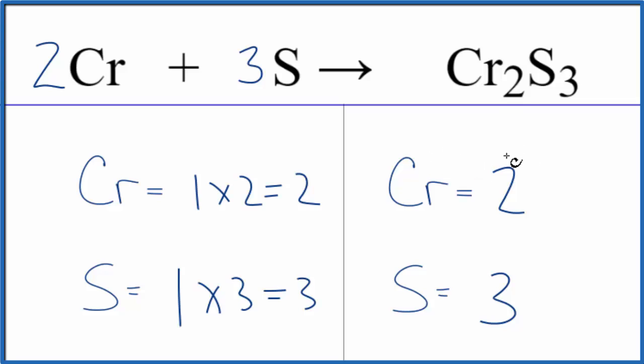On both sides we're done. This is the balanced equation for Cr plus S. Chromium plus sulfur gives us chromium three sulfide. Note: if you are asked to report the coefficients, you could say two, three, one. This is Dr. B, and thanks for watching.